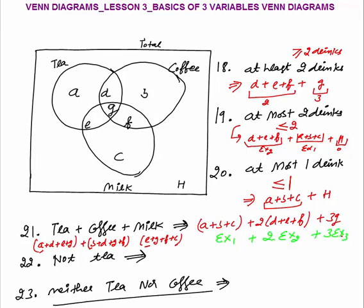Not tea means we count everything outside the circle of tea — we exclude all people who consume tea. Once you remove the tea circle, what you are left with is B plus F plus C plus H. That is the meaning of not tea.